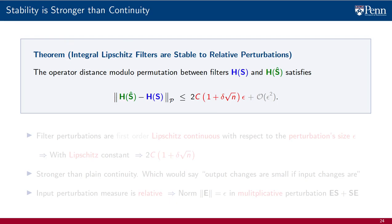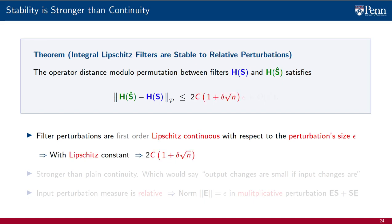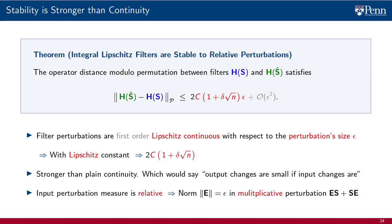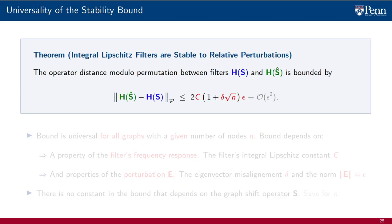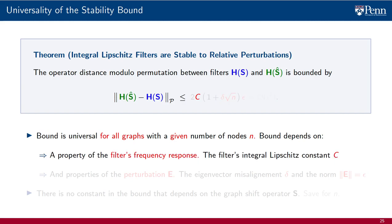Since the bounds are almost identical, the same comments we made for additive perturbations still hold. In particular, the claim is about Lipschitz continuity of the filters relative to the perturbation size epsilon. The Lipschitz constant is the same we have for additive perturbations multiplied by 2. But the important point to remark is that the claim is stronger than plain stability, which is the reason why we speak of stability, not continuity. The difference is that the perturbation measure epsilon is relative — it represents the norm of a multiplicative symmetric term of the form ES plus SE. The bound is universal: it holds for all graphs of a given size n, and it depends on a property of the filter's frequency response — the integral Lipschitz constant C — and two properties of the perturbation matrix E: the eigenvector misalignment delta and the error norm epsilon.